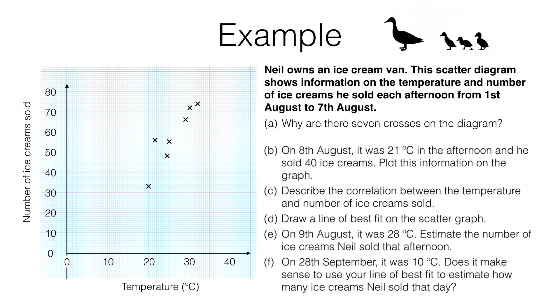Well, there is one cross for each afternoon. For example, this cross here tells us that the temperature was 20 degrees one afternoon, and on that afternoon Neil sold 33 ice creams. So we can write our answer: there is one cross for each afternoon.